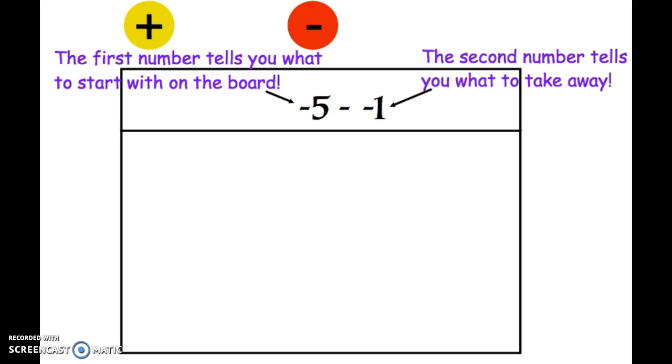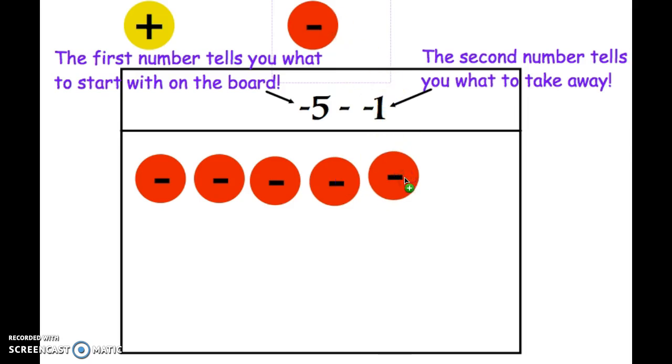So in this case I'm going to start with negative 5 on the board, so I have to put 5 red chips on the board. The second part says I have to take away negative 1.